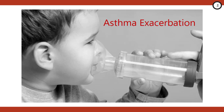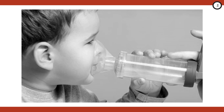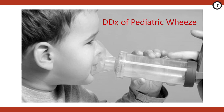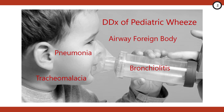Before we tag these little guys and gals with that asthma label, we should take a step back and make use of a cognitive forcing strategy so we don't hang our hat on that asthma diagnosis too quickly. It's important to remain cognizant of the differential diagnosis for pediatric wheeze, which includes things like tracheomalacia, bronchiolitis, pneumonia, airway foreign body, and anaphylaxis. We want to ask questions around each one of these diagnoses to try to tailor them off our list.